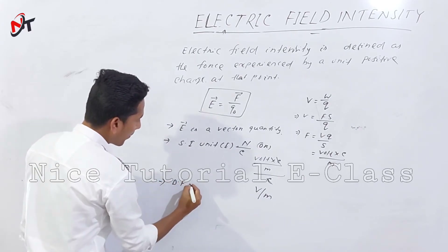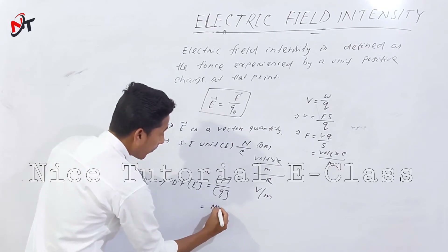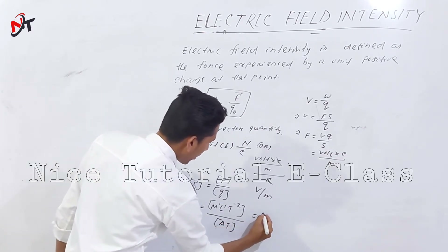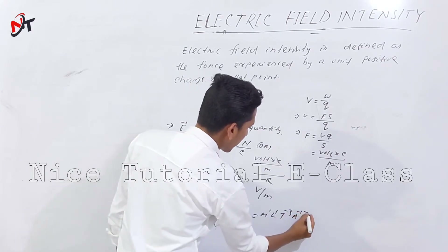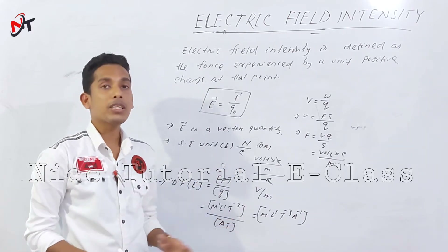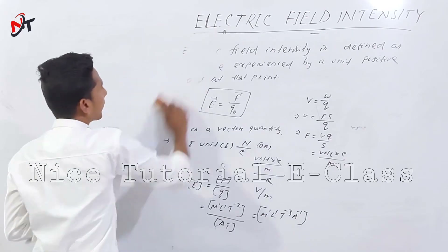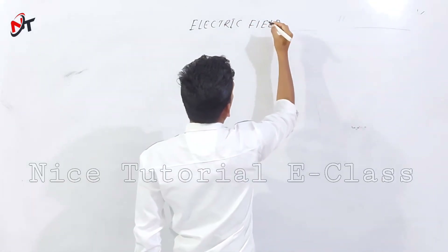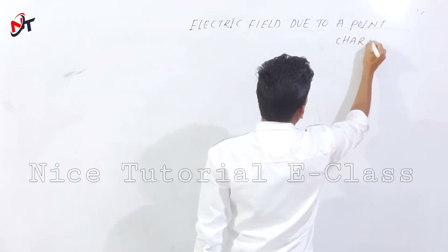The dimensional formula for electric field is force upon charge: M¹ L¹ T⁻³ A⁻¹. Electric field intensity is the force per unit charge and is a vector quantity. Now we will define the electric field due to a point charge.